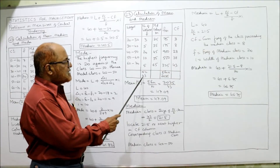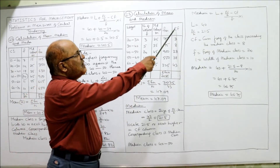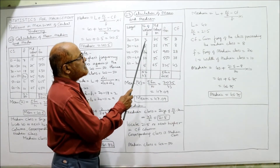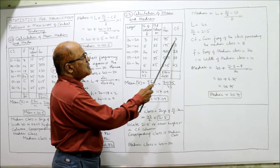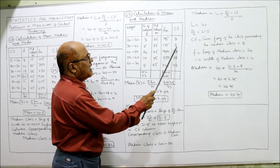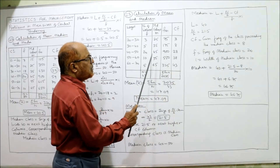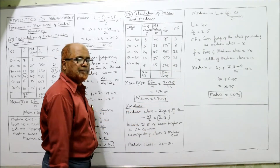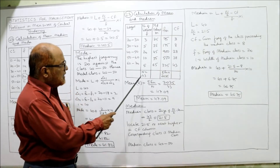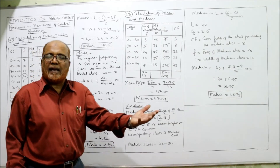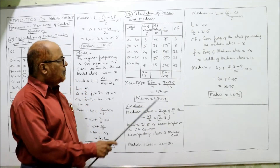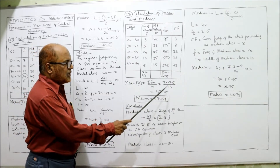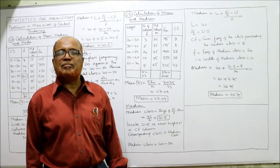The cf column is required for calculating the median. First frequency is 3, so cf = 3; then 3+5 = 8, 8+20 = 28, 28+10 = 38, 38+5 = 43. The last cf equals n = 43, confirming our calculations are correct. Mean = summation fm ÷ n = 2025 ÷ 43 = 47.09 is the arithmetic mean.